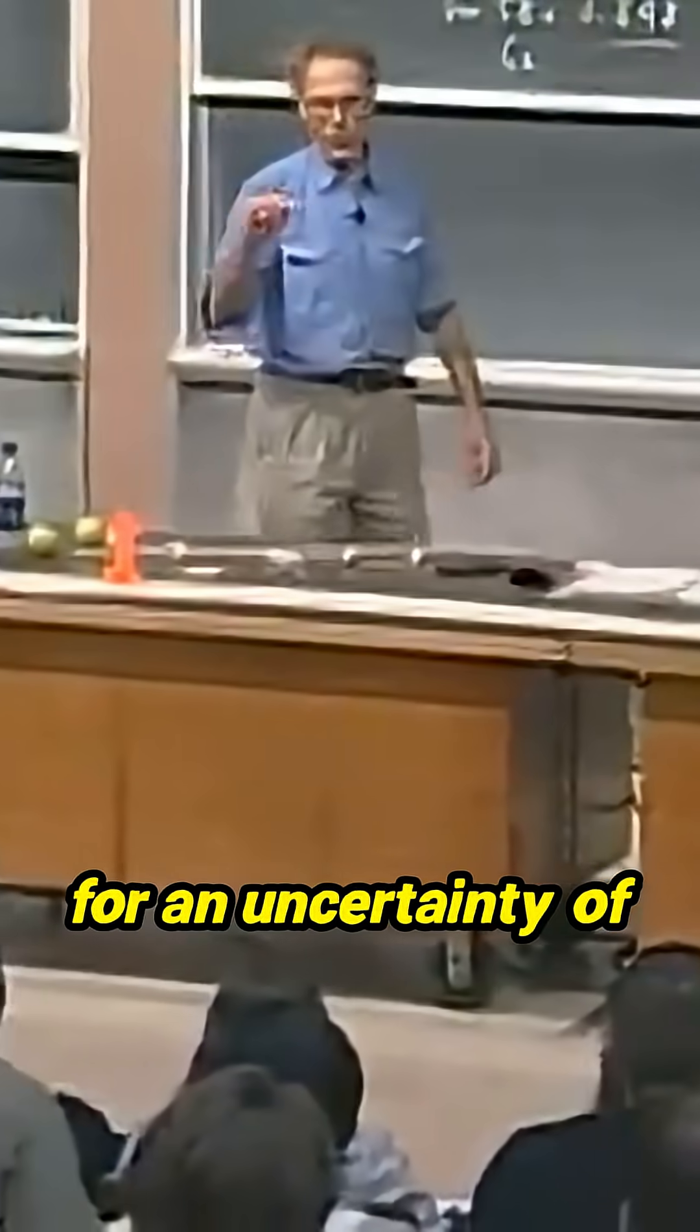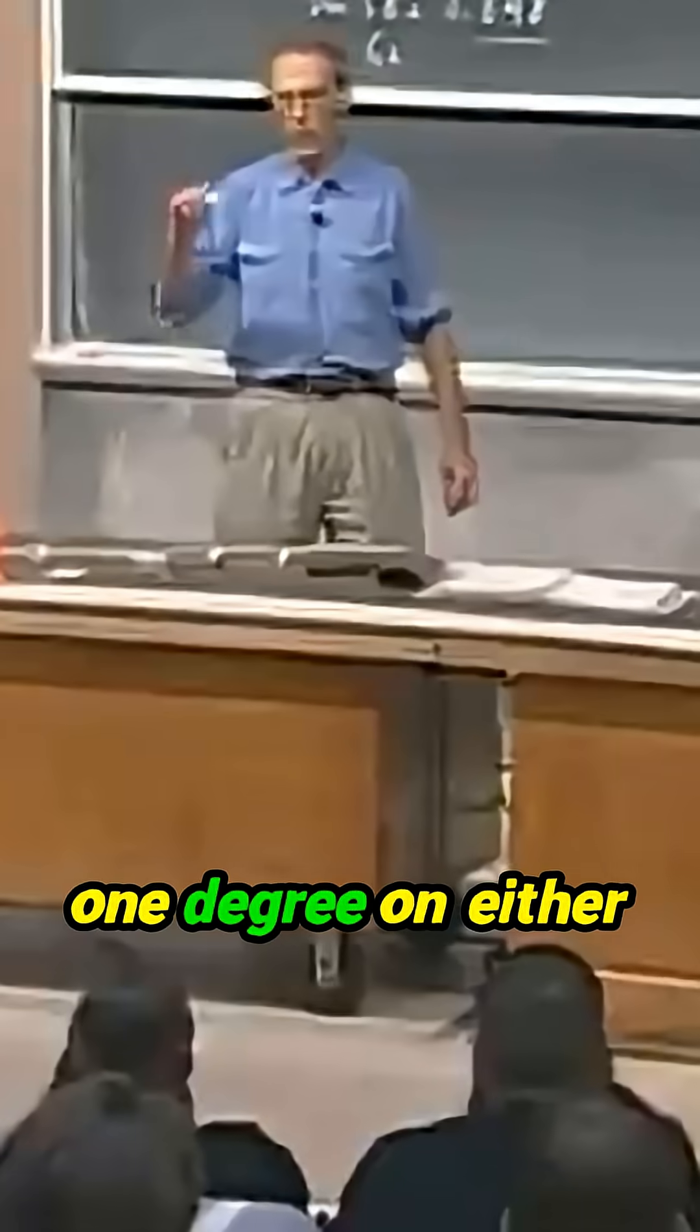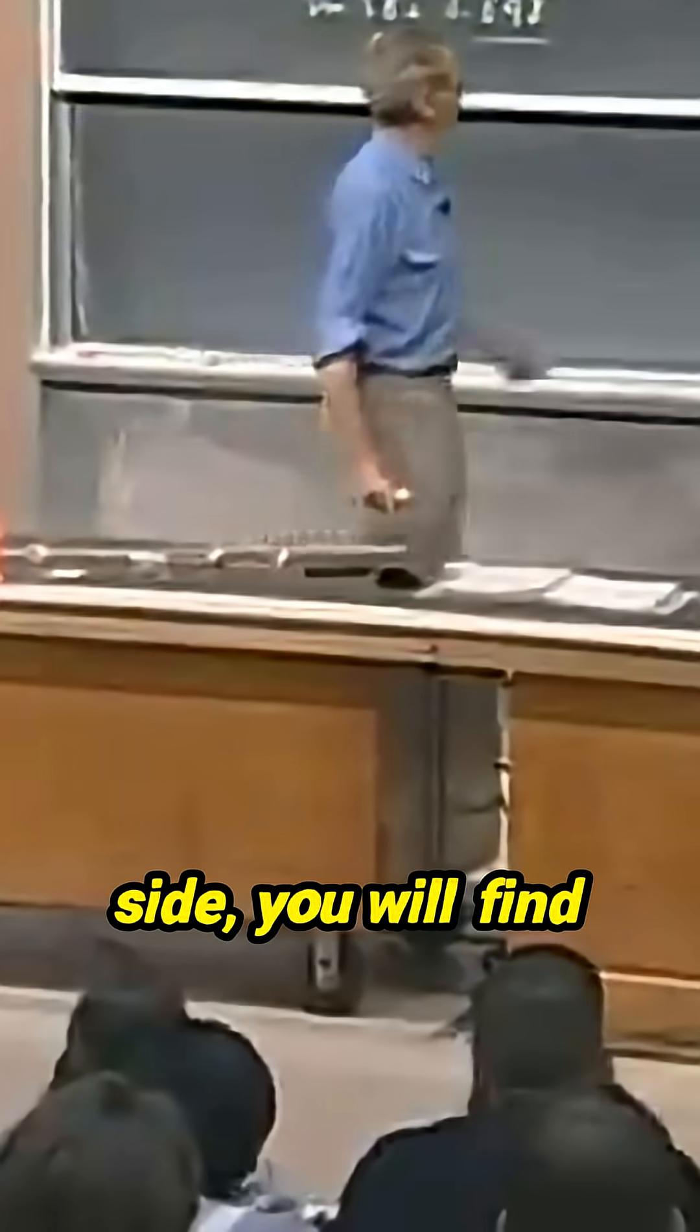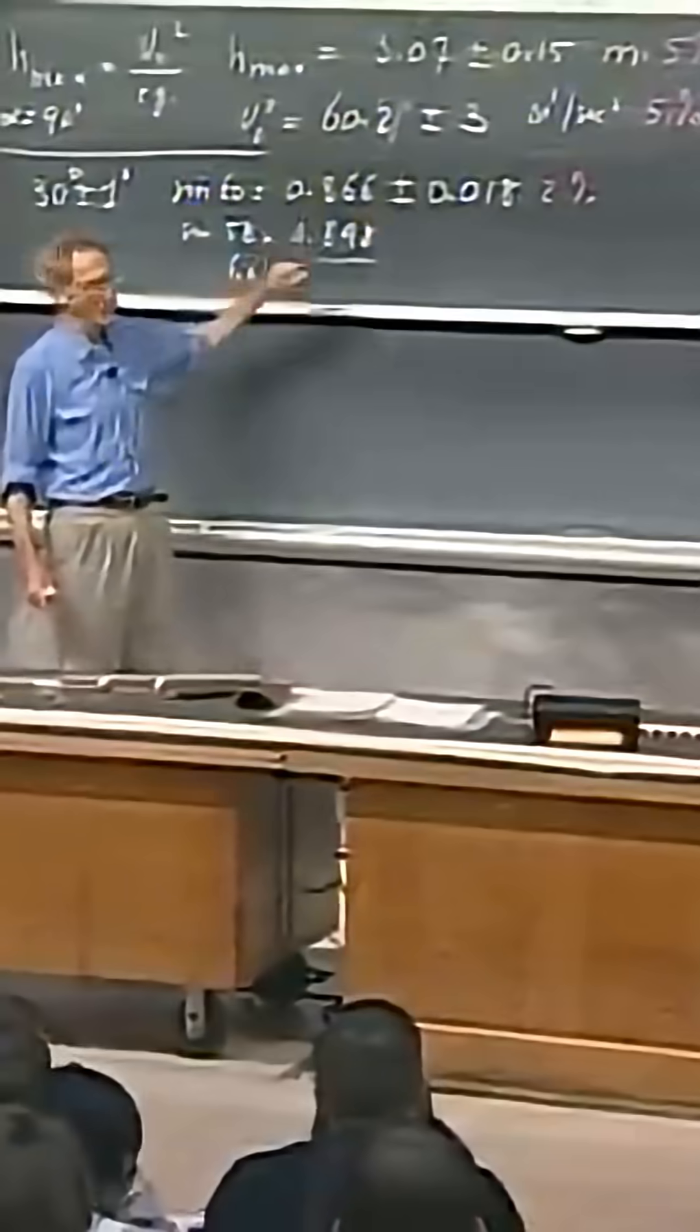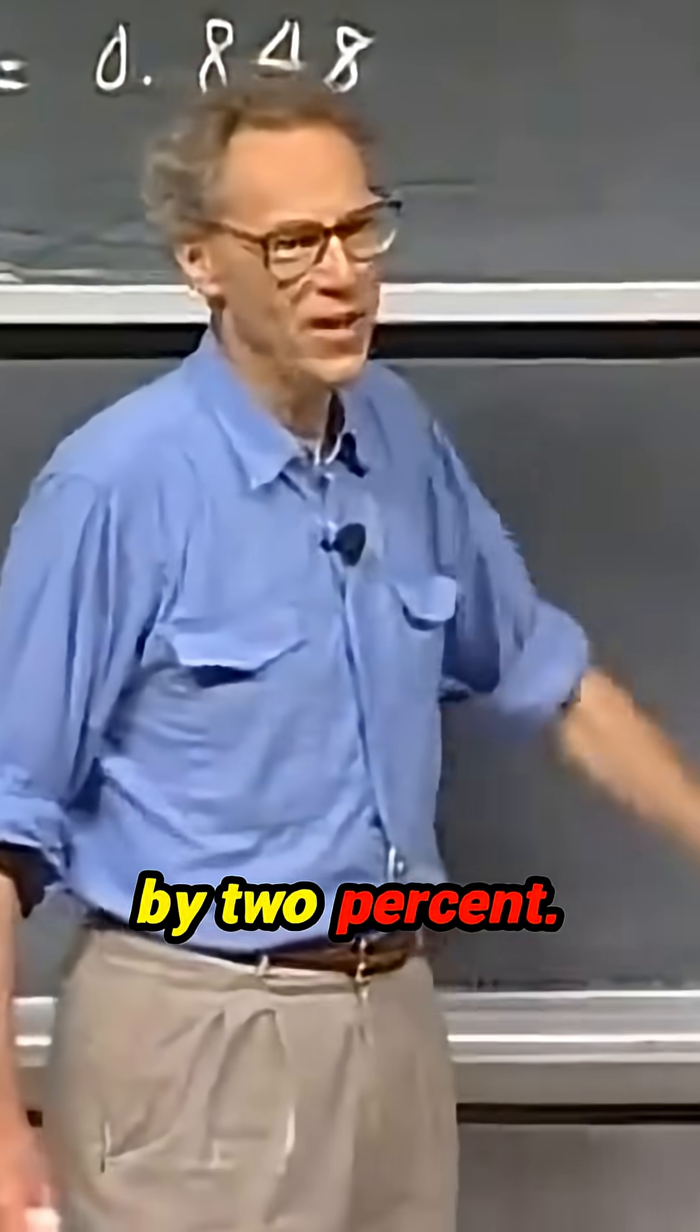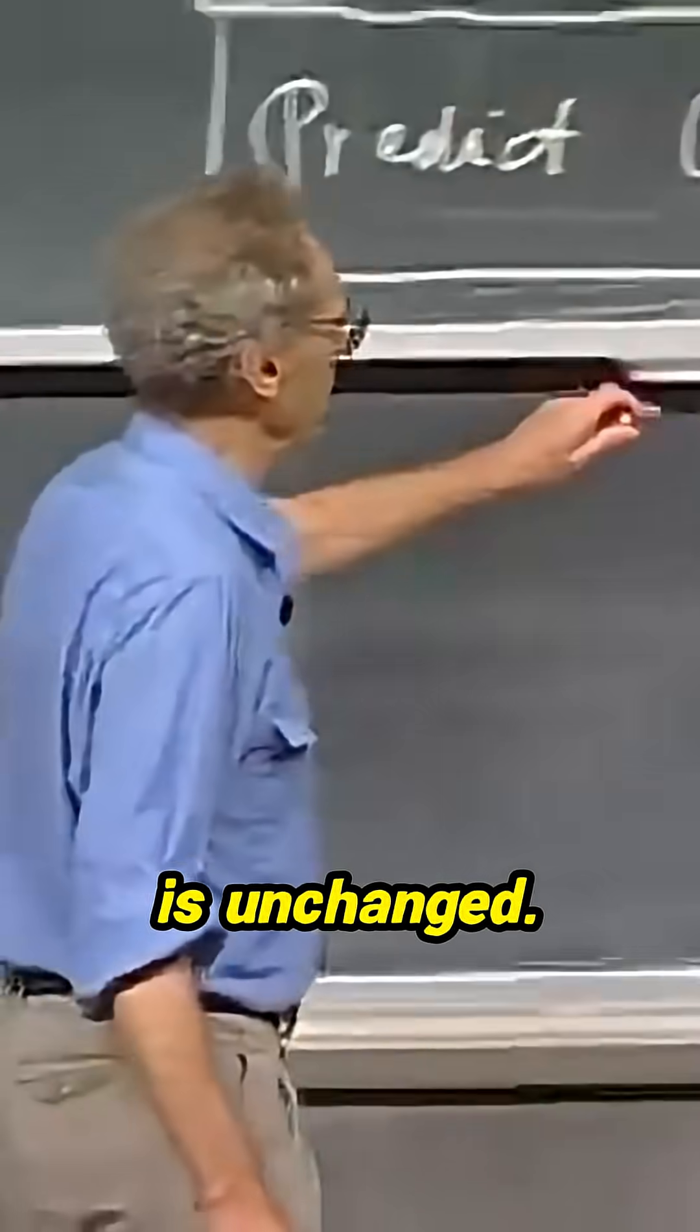If you allow for an uncertainty of one degree on either side, you will find exactly these same numbers because of the symmetry of the sine curve. So again, you're off by two percent. No difference. And so this prediction is unchanged.